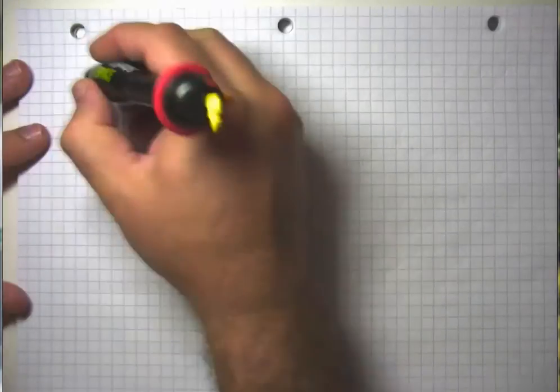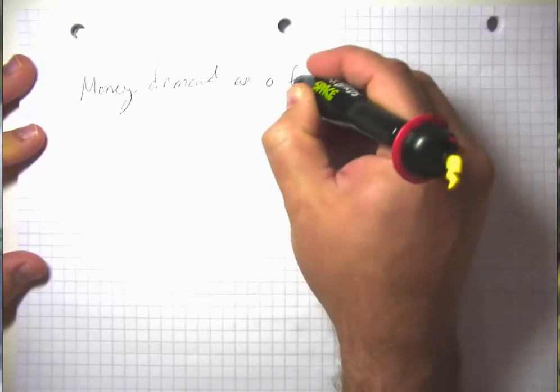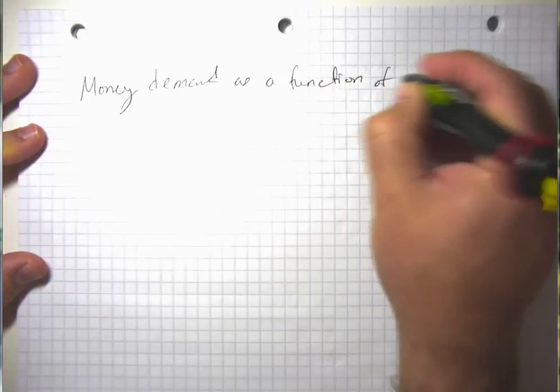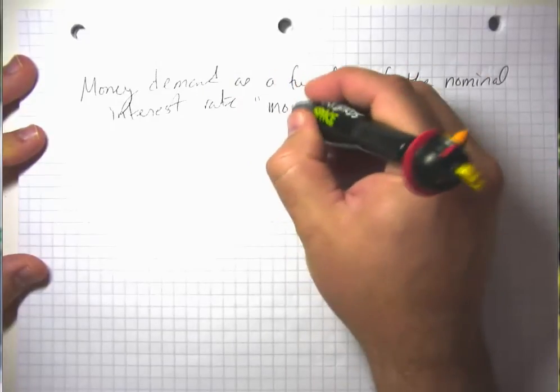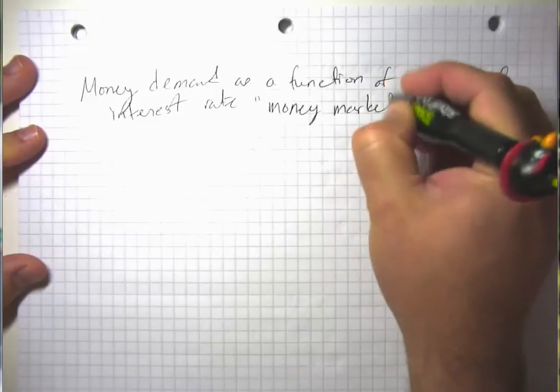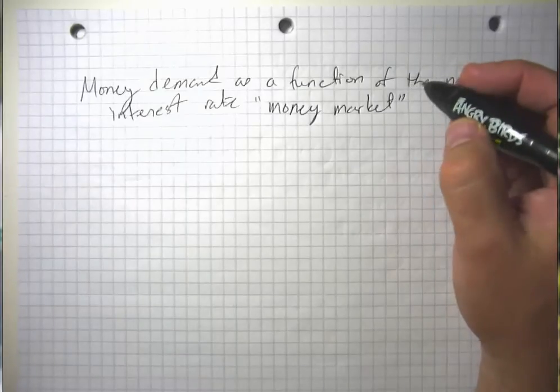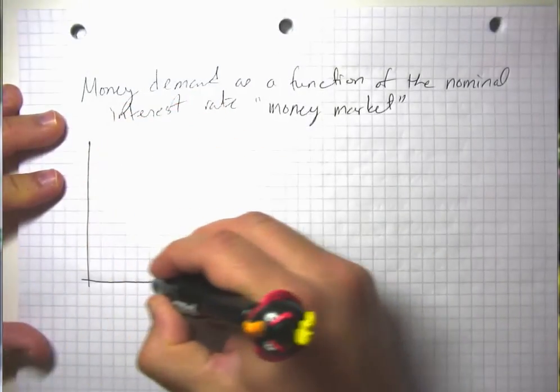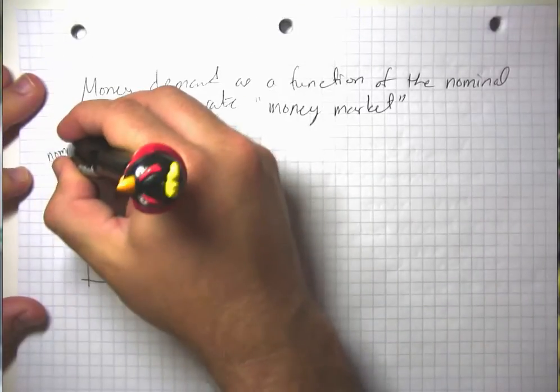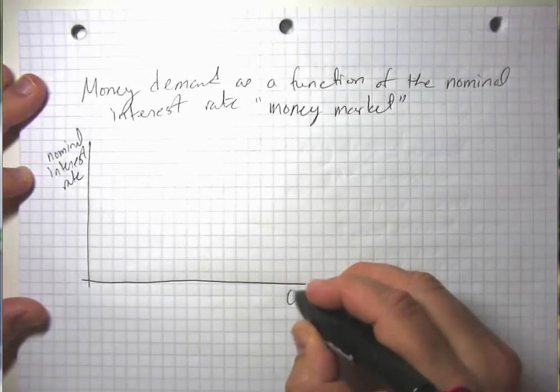So instead, theory of liquidity preference looks at money demand as a function of the nominal interest rate. And we're going to now be talking about what's sometimes called the money market. And the money market is the idea of what is the interest rate on very short-term loans, something like 30-day, 90-day loans. And our model of the money market is going to have the nominal interest rate on this axis and the quantity of money on this axis.